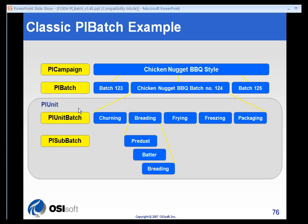When you get down to the unit, the PI Unit is where everything in the physical world takes place. The Unit Batch is where the actual production is taking place. In this case, we have five units involved in the Unit Batch level of our classic batch example: churning, breading, frying, freezing, and packaging. Those are the steps involved in running one PI Batch.